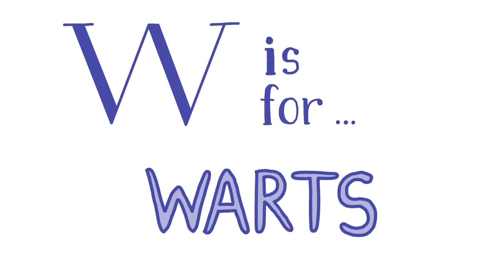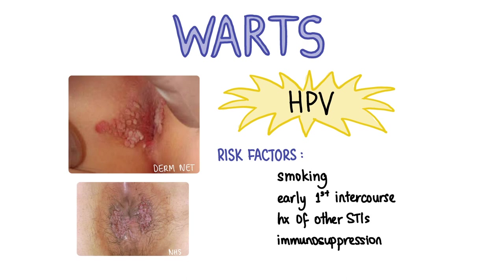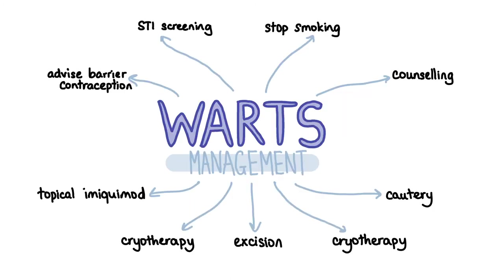W is for warts. Anogenital warts are benign growths of the epithelium caused by infection with the human papillomavirus, transmitted sexually in most cases. Risk factors include smoking, early age of onset of sexual intercourse, history of other STIs and immunosuppression. The lesions are typically painless and may cause itching, bleeding or dyspareunia. Condom advice is given until the lesions have resolved. As concurrent STIs are very common, screening should be offered for chlamydia, gonorrhoea, HIV, syphilis and hepatitis B and C. Smoking cessation should be encouraged, and psychological distress is common so referral for counselling may be appropriate.